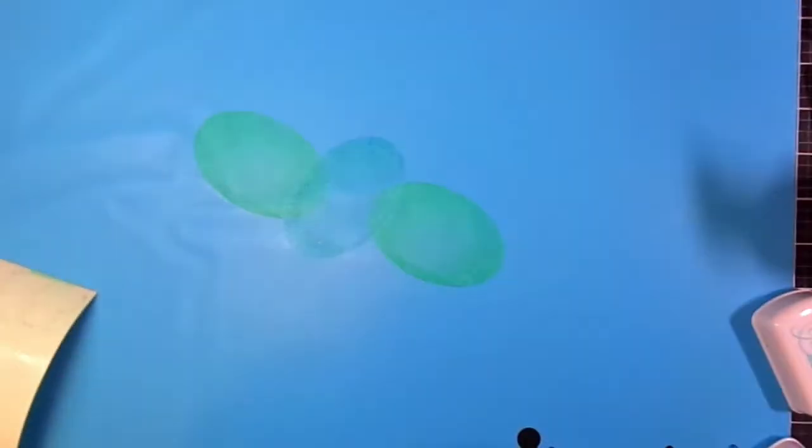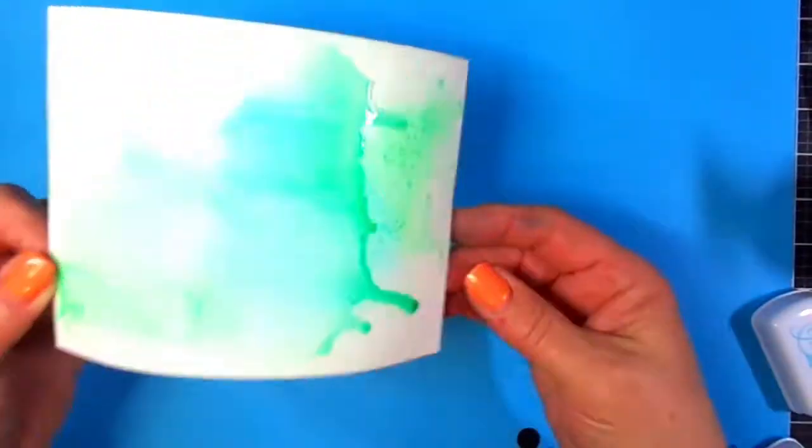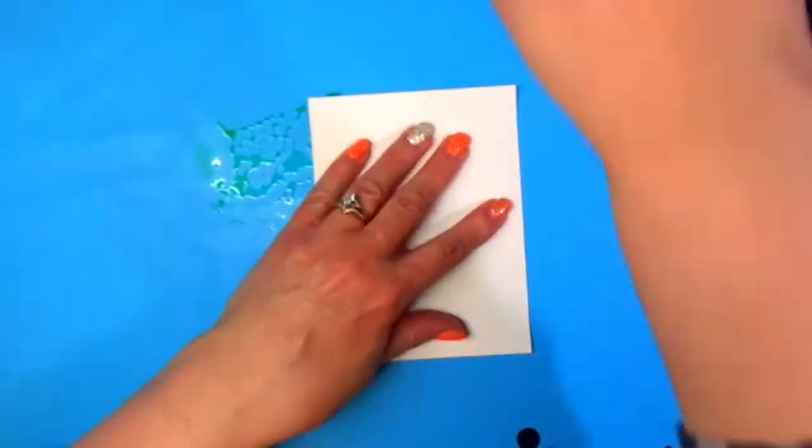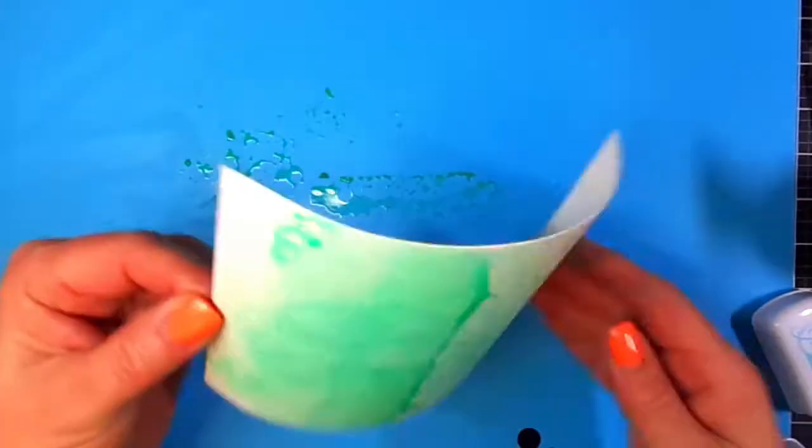But they were a little bit too light, so then I switched over to something a little bit more vibrant. I grabbed Life of the Party and I started with some Aquatini, some Lime Ricky, and then I also grabbed my Carnival collection and I grabbed some Blue Suede Shoes.